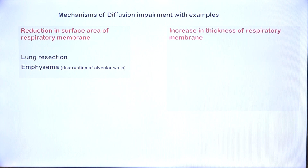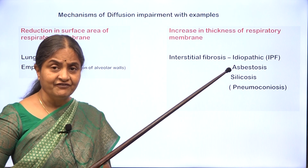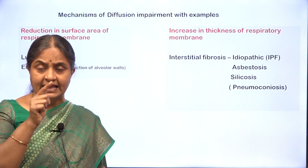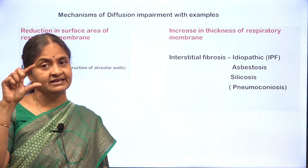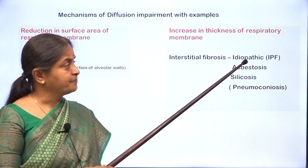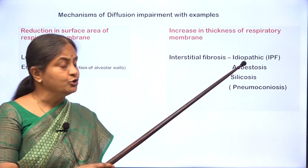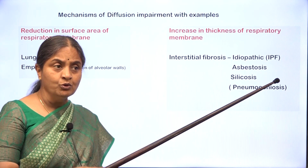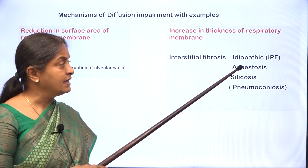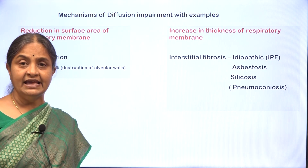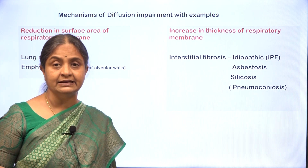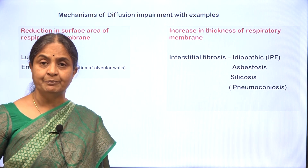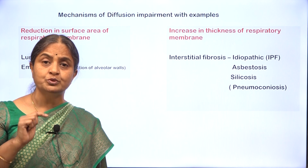Another important example of a condition where surface area is reduced is emphysema, where there is destruction of the alveolar walls. What are conditions where there is an increase in thickness of the respiratory membrane? Interstitial fibrosis, where the interstitium between the alveolar epithelium and the capillary endothelium — the pulmonary interstitium — is thickened. It could be due to fibrosis; if the fibrosis is not due to any known cause, we call it idiopathic pulmonary fibrosis. A set of conditions called pneumoconiosis describes fibrosis due to some dust particle — for example, in asbestosis, asbestos fibre when inhaled initiates the fibrosis; in silicosis, silica dust as in construction workers initiates the fibrosis. These are all examples where the pulmonary interstitium is thickened, increasing the distance through which gases have to diffuse.